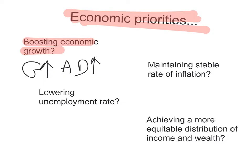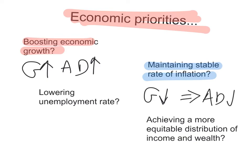If the government wants to maintain a stable rate of inflation because prices are rising too quickly, it will probably spend less, and therefore aggregate demand will decrease. If the government wants to lower the unemployment rate and create more jobs, it will do the same as boosting economic growth — it will increase government spending, which will lead to an increase in aggregate demand and the aggregate demand curve will shift to the right.